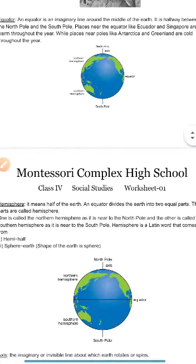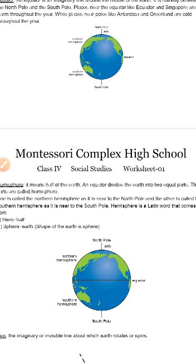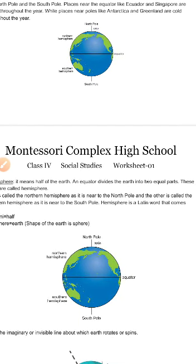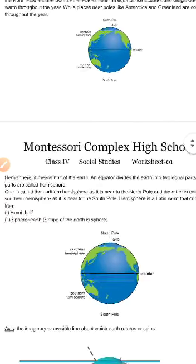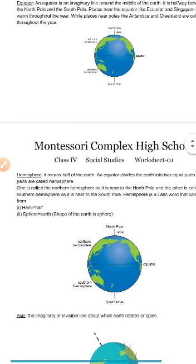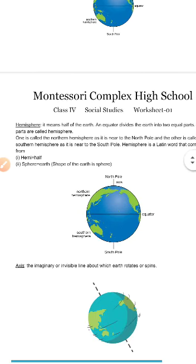Hemisphere means half of the earth, as the name suggests — 'hemi' means half and 'sphere' is the shape of the earth. The equator divides the earth into two equal parts, since it passes through the exact center. These two parts are our hemispheres. One is called the northern hemisphere, which is near the north pole, and the other is called the southern hemisphere, which is near the south pole. Hemisphere is a Latin word.